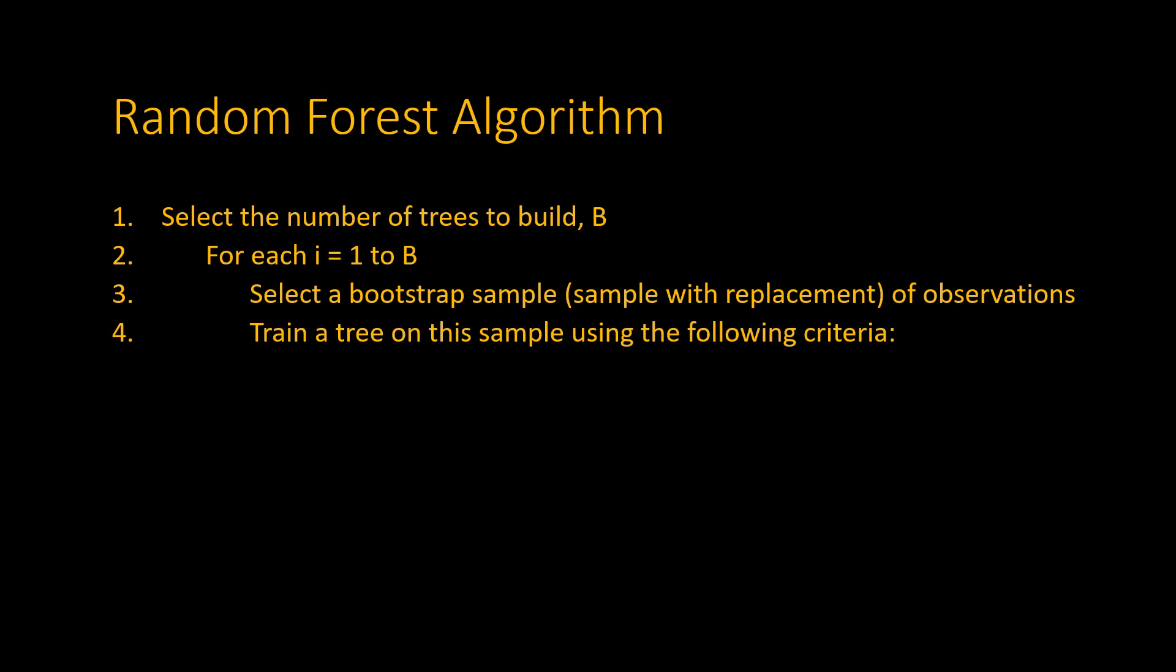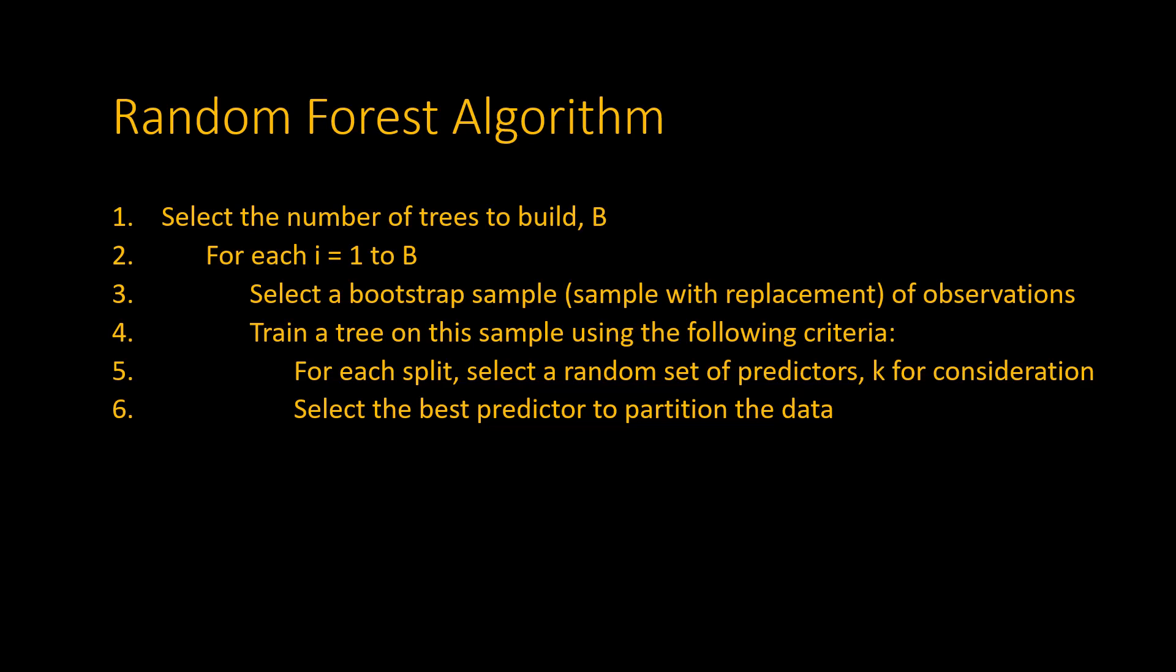Once we have drawn B bootstrap samples, for each sample that we choose, we build a single tree and let it grow. However, the way the tree is built is a little different than traditional classification trees. For each tree at each split, we choose a certain number of predictor variables, let's call that k, where k is less than the total number of predictor variables. Of these k, we will choose the best predictor for that split. The split happens on that predictor, but then the cycle repeats for the next split with a random set of k predictors chosen, and again the best predictor is chosen to split the data. This process continues until a predefined stopping rule is met.